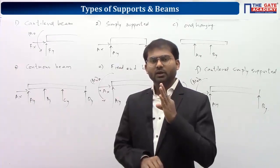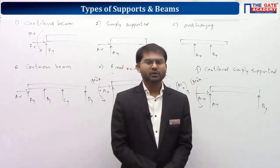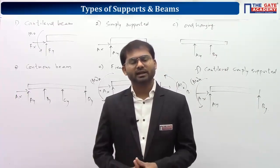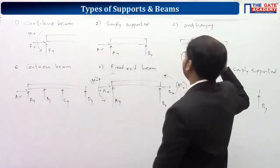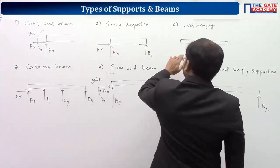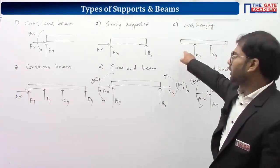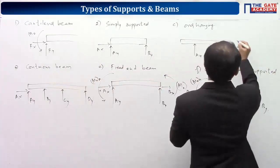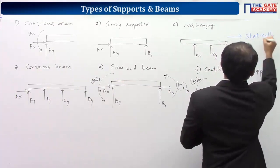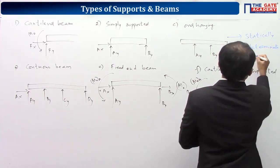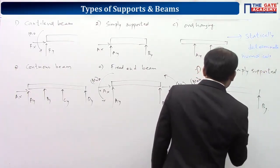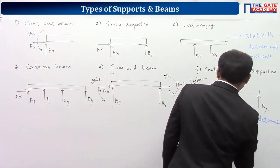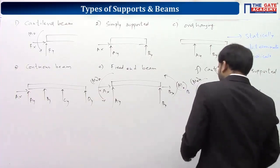With three equations, we can solve for at most three unknowns. If you have less than or equal to three unknowns, you can solve the loading condition and get the answers. So the first row of beams — all having three or fewer unknowns — are statically determinate. The remaining three are statically indeterminate.